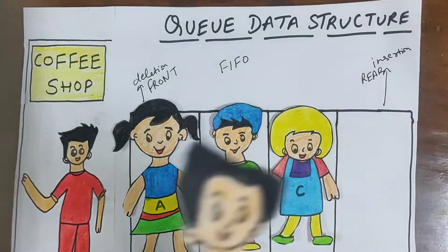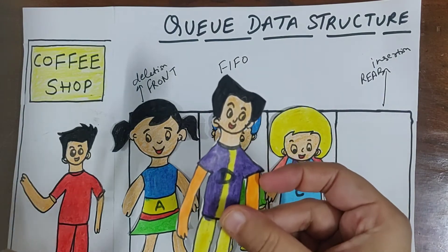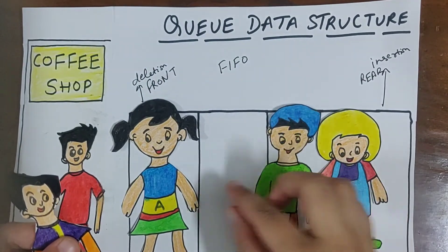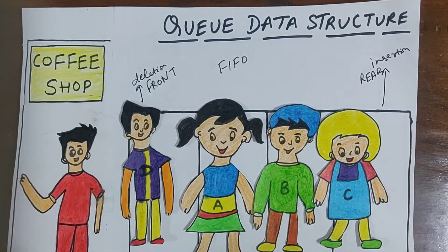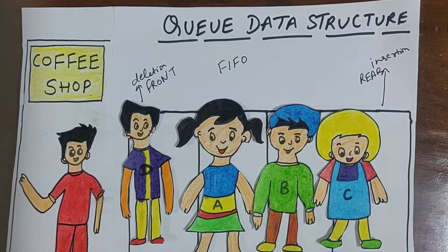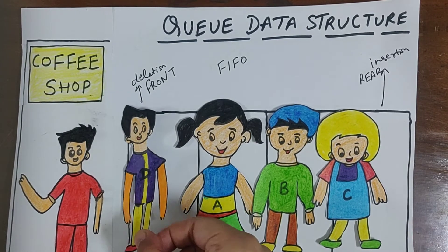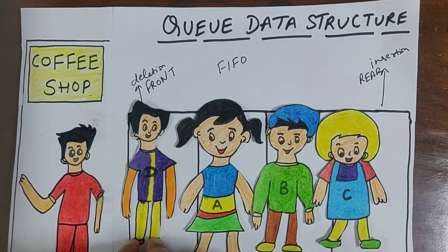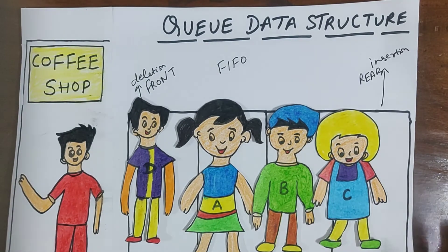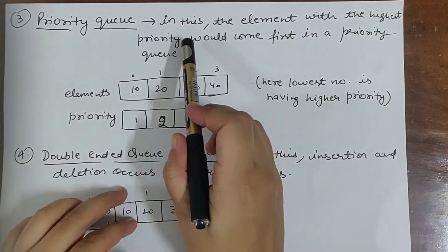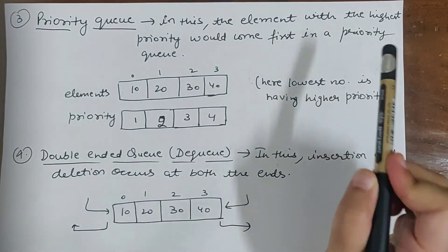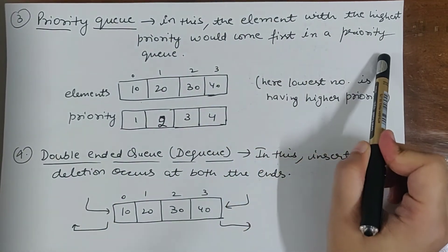So D is a VIP, so everyone has to move and then he will get the chance to get the coffee first because he is a VIP. He comes late — don't worry, he has to stand in the front. So this is all about priority queue. A priority queue is a queue in which the element with the highest priority comes first.